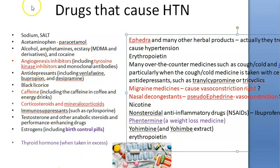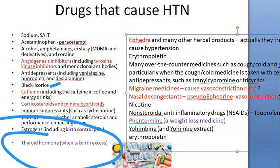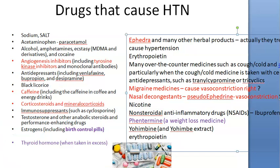Licorice consumption can raise blood pressure. Thyroid hormone supplementation can cause hypertension. Nasal decongestants like pseudoephedrine cause local vasoconstriction but systemic effects can cause hypertension. Migraine medications cause vasoconstriction — migraine involves throbbing headache from excess blood supply, so vasoconstrictors are used. Their systemic effects can raise blood pressure.